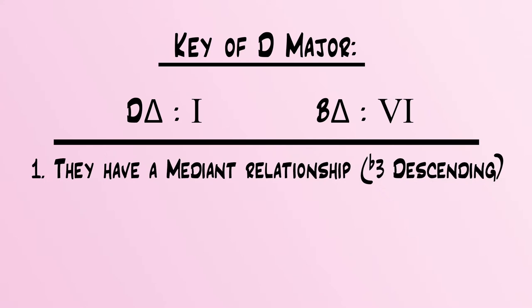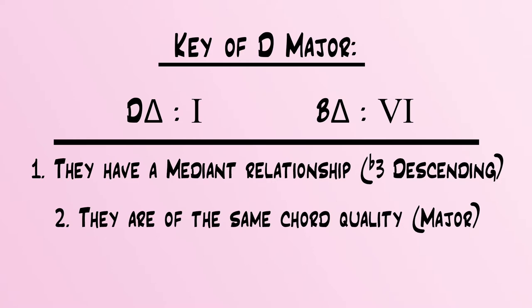We can check this by seeing that the two chords have a relationship of a minor 3rd descending, they are both major triads, and they share F sharp as a single common tone.